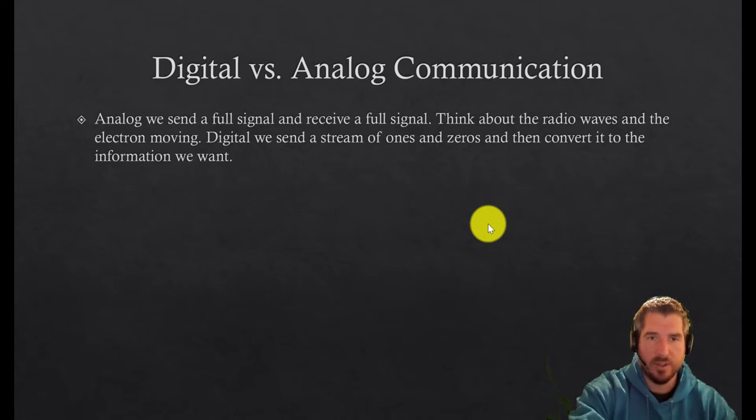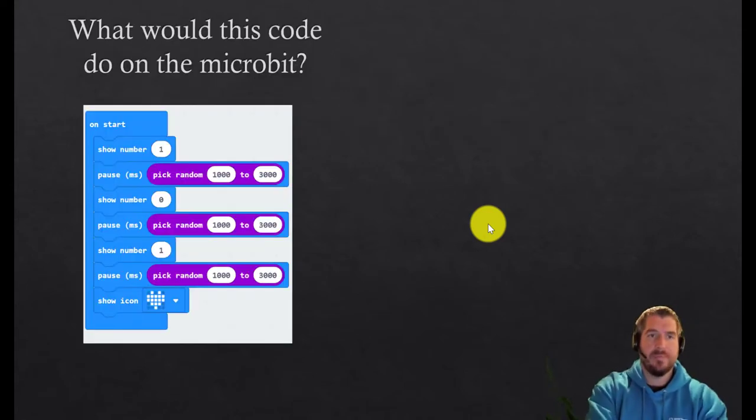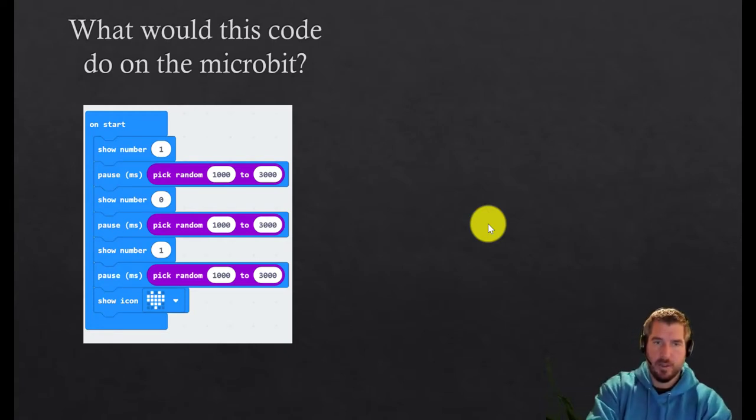Okay, so we're going to think a little bit about how digital communication works and we're going to go back to our micro:bit. So let's say you put this code on your micro:bit. So I want you to read this code for a minute or two and I want you to pause the video and I want you to think about what this code will do. So go ahead and pause it.